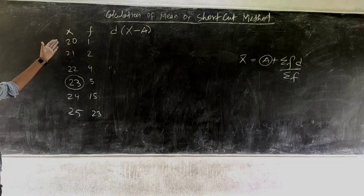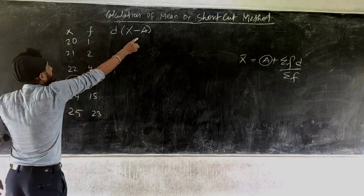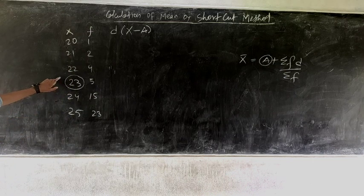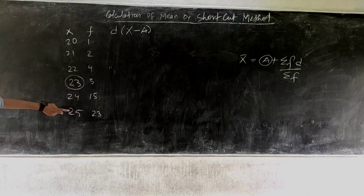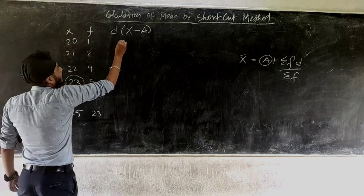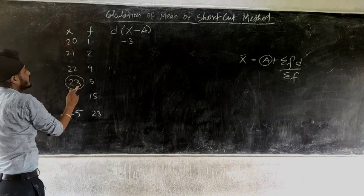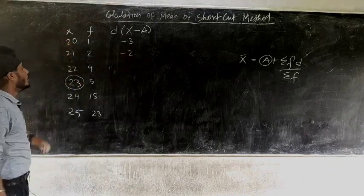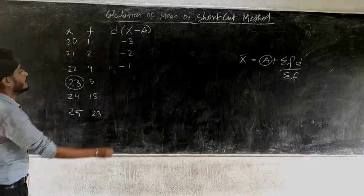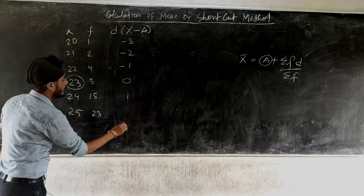The x series is: 20, 21, 22, 23, 24, 25. To find d, subtract x minus A (which is 23) for each value: 20 − 23 = −3, 21 − 23 = −2, 22 − 23 = −1, 23 − 23 = 0, 24 − 23 = 1, 25 − 23 = 2. Do not ignore the minus signs. This way we got the d series.